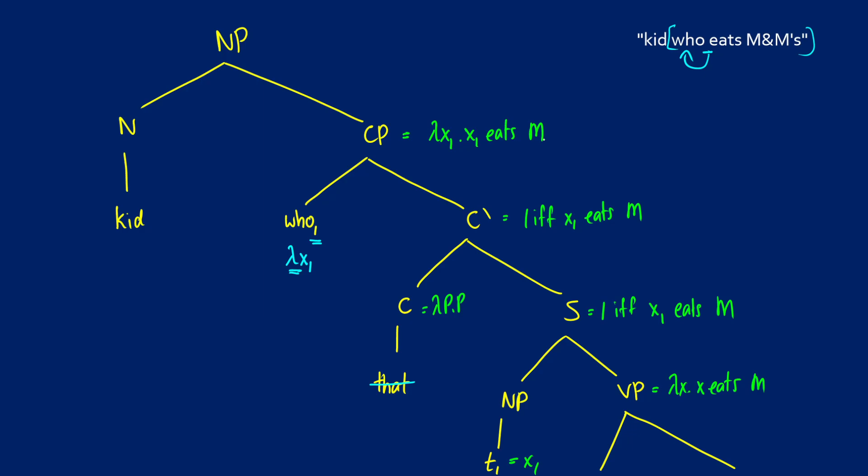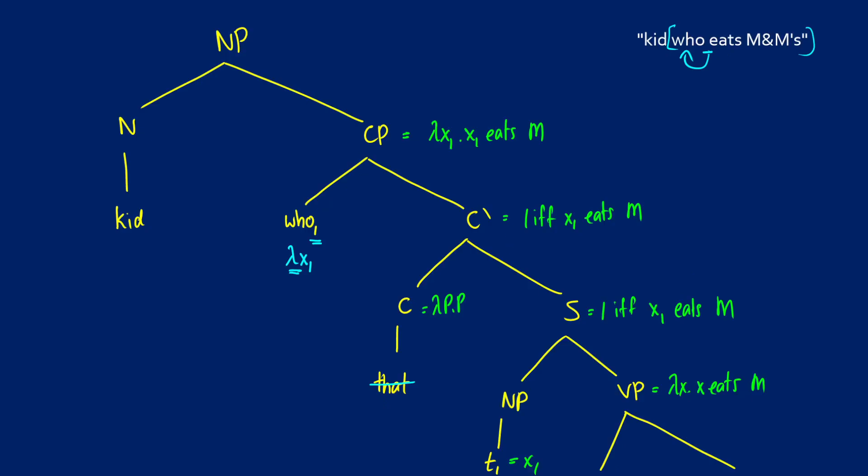Okay, now when we have "kid," what are we doing? And I want to show something a little bit different here. So I'm going to say that "kid" is lambda Y dot Y is a kid, because I'm using different variables here. So I'm using lambda Ys and I'm using lambda X1s. What the predicate modification rule allows us to do is to pick a new variable.